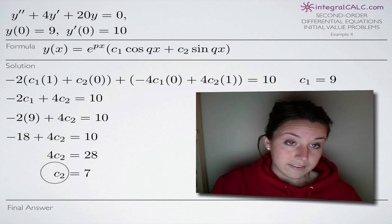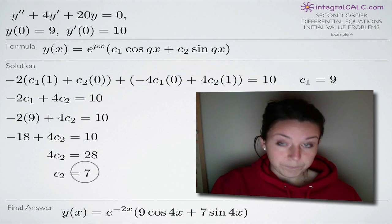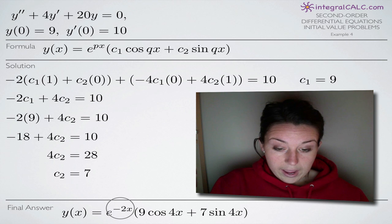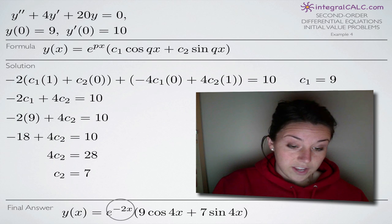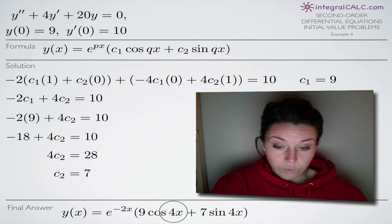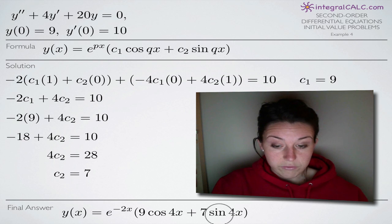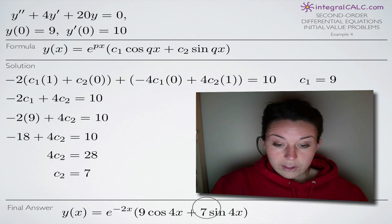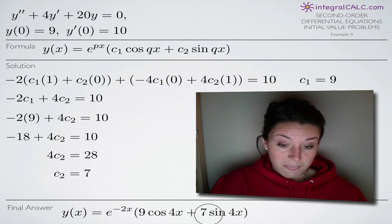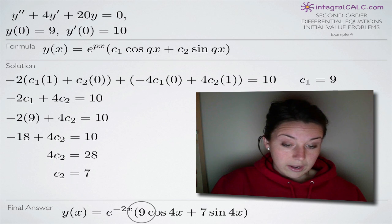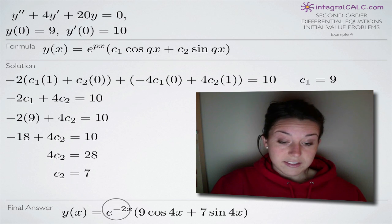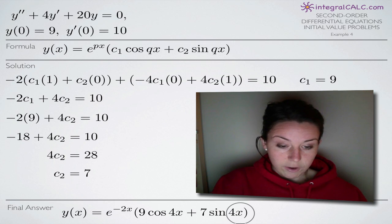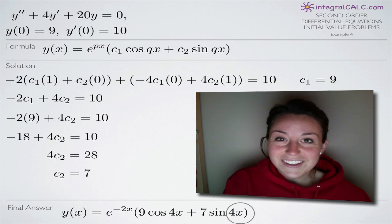Now that we've solved for both c₁ and c₂, we'll plug them back into our y(x) equation. Remember p was negative 2 — that's the coefficient in the exponent — and q was 4, which is why we have 4x inside both the cosine and sine functions. Plugging in c₁ = 9 and c₂ = 7, that's our final answer. You can multiply out the e to the negative 2x if you want, but it's cleanest to leave it factored like this. I hope that helps, and I'll see you in the next video!